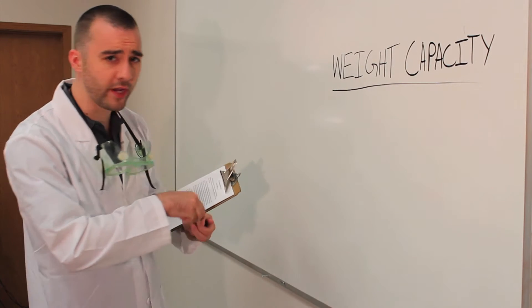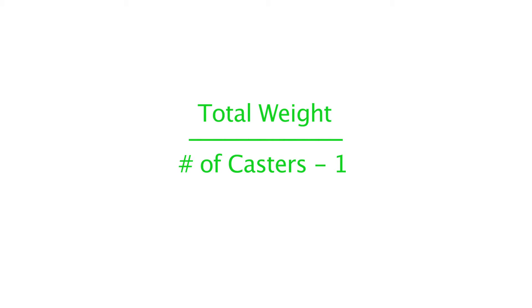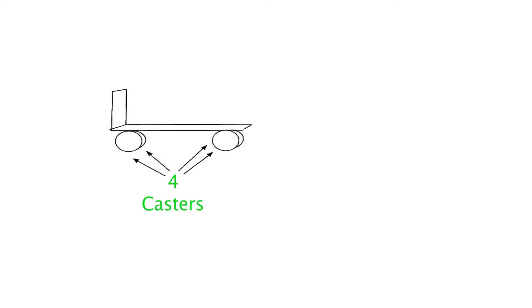You just need to take the total weight divided by the number of casters you plan on using minus one. If you're building a four caster cart to carry a 1,400 pound bag of cats, just add up the total weight.